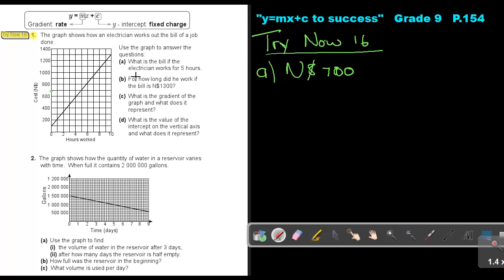Let's go to the next one, number B. For how long did he work if the bill is 1,300? Now, can you all see where he's one? Let me just use a ruler. Can you see there? And then just go down. And how many hours did he work? He was working 10 hours.